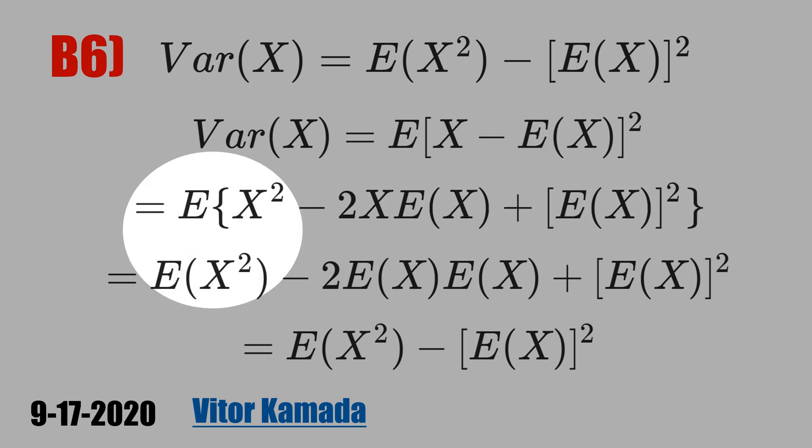Now we take the expectation of X squared, and we take the expectation of X and treat 2 and the other term as a constant. The expected value of X is a constant because it's the mean of X. And the square of the mean is a constant, and the expectation of a constant is a constant.